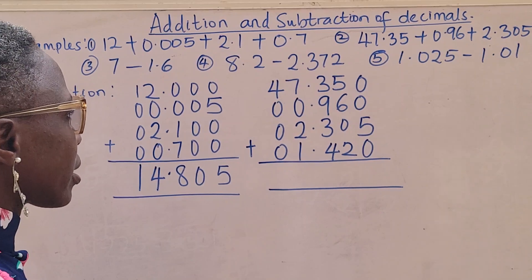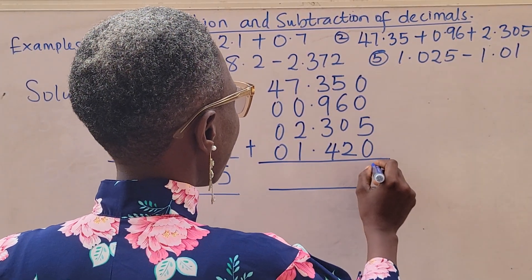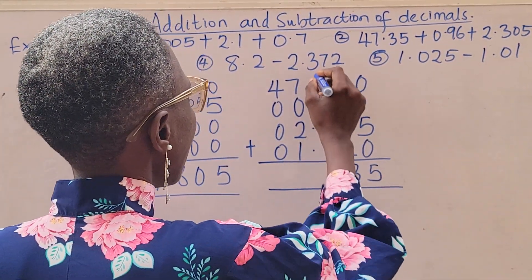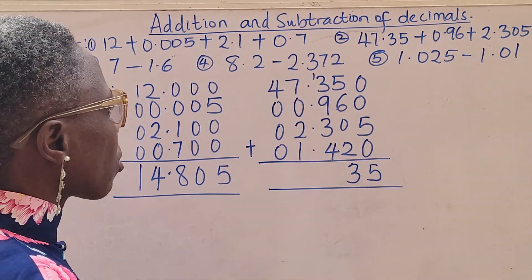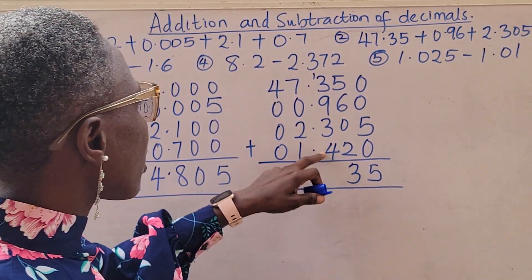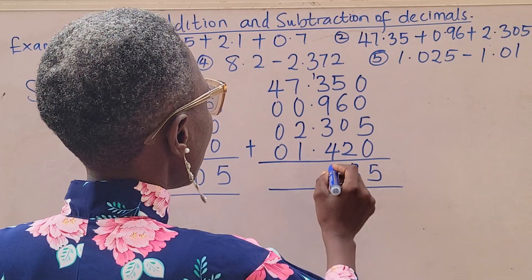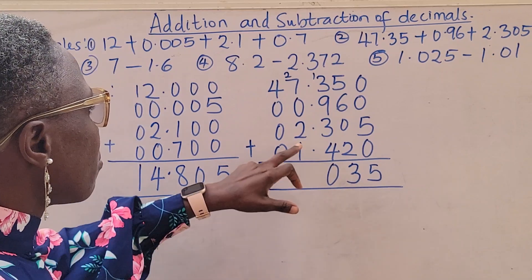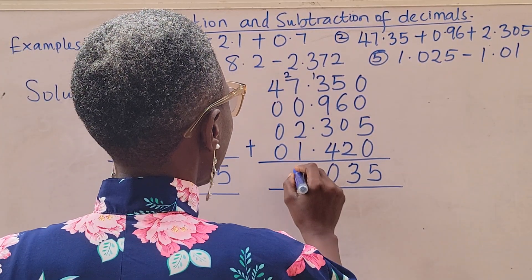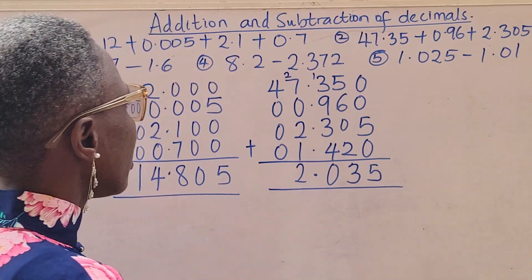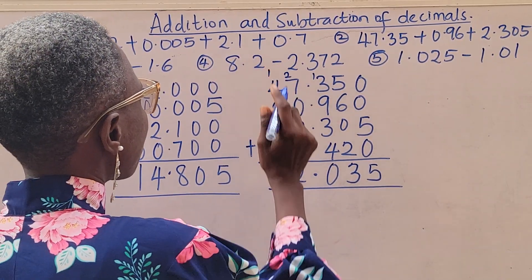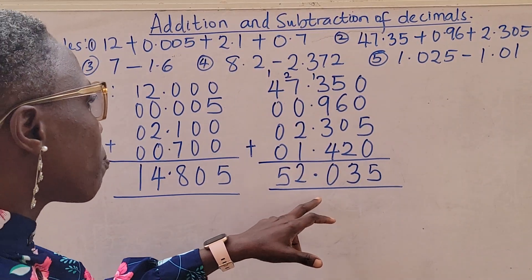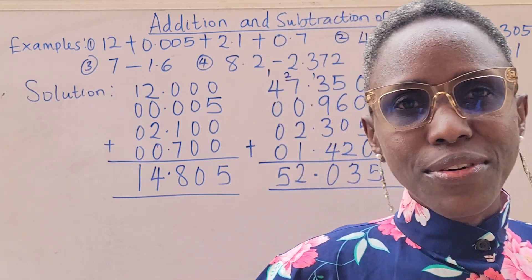Now solving: 5 + 0 = 5; 5 + 6 = 11, + 2 = 13 — write 3, carry 1; 3 + 9 = 12, + 3 = 15, + 4 = 19, + 1 carried = 20 — write 0, carry 2; 7 + 2 = 9, + 1 = 10, + 2 = 12 — write 2, carry 1; then 1 + 4 = 5. The final answer is 52.035.